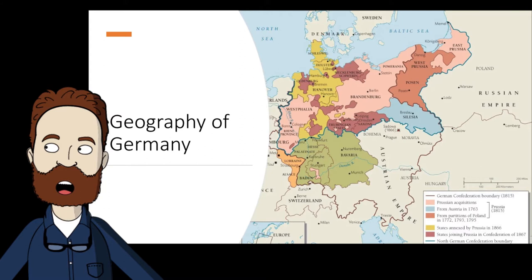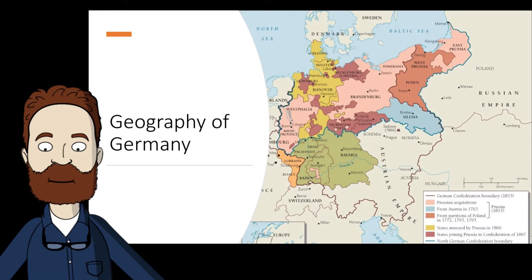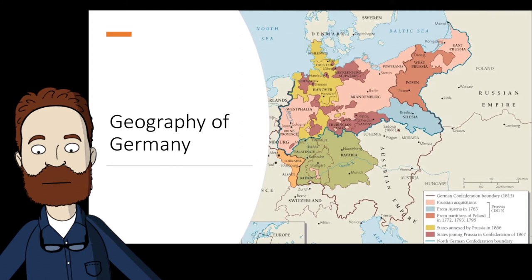Germany also had no single focal point — not like London to England, or Rome to Italy, or Paris to France. Berlin was not really the heart of Germany. There were other relatively modern cities like Munich, Dresden, and Cologne that had city histories pointing back centuries.